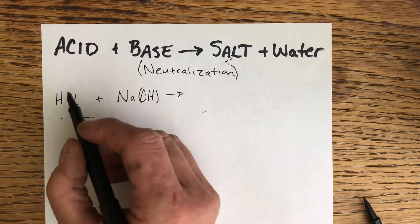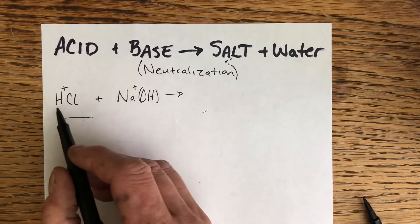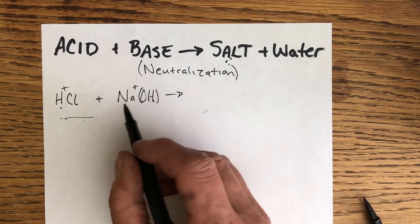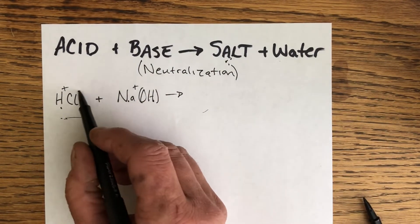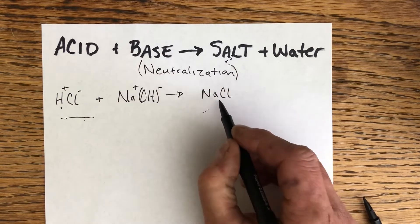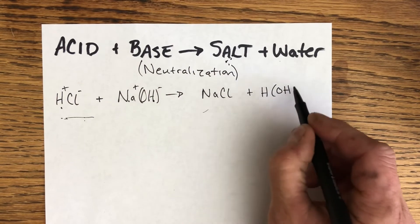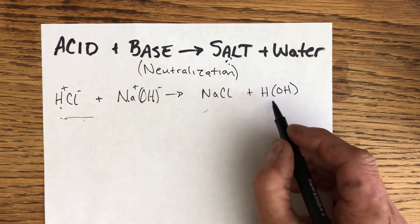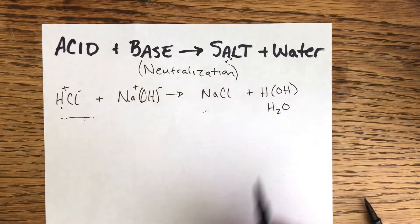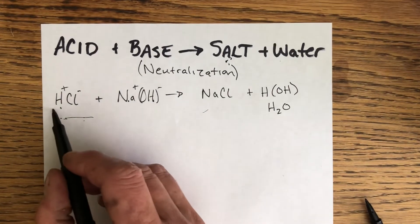The hydrogen is going to hook up with the hydroxide, and the sodium is going to hook up with the chloride. So here's our NaCl, that's our salt, and then H hooking up with OH. I usually tend to write that as either HOH like this or H2O is another totally fine way to write that.